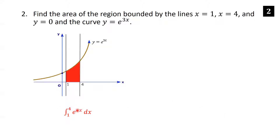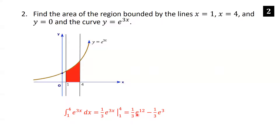This integral uses the substitution u equals 3x, then du is 3 dx, so we're missing a 3, which we undo with a one-third. We get one-third e to the 3x from 1 to 4. Plugging in: 3 times 4 is 12, 3 times 1 is 3. Factoring out one-third and e cubed, the answer is one-third e cubed times (e to the 9th minus 1).